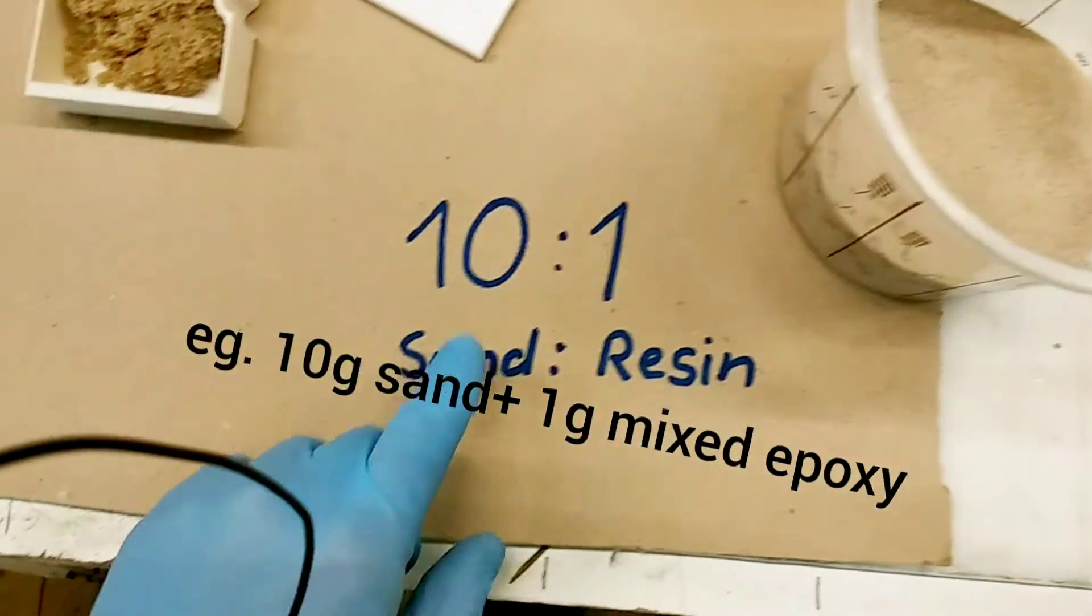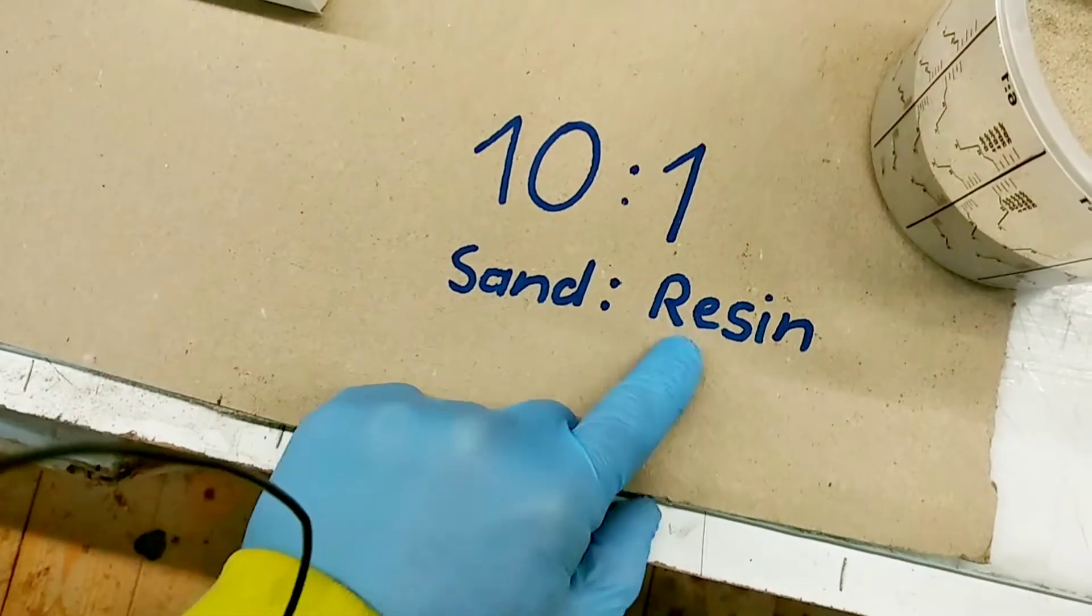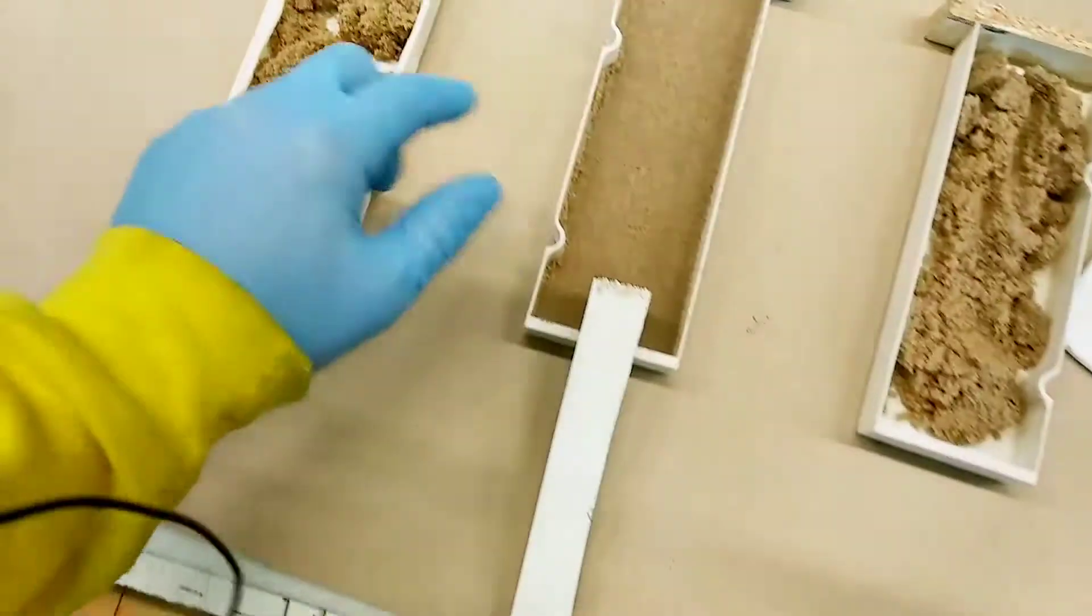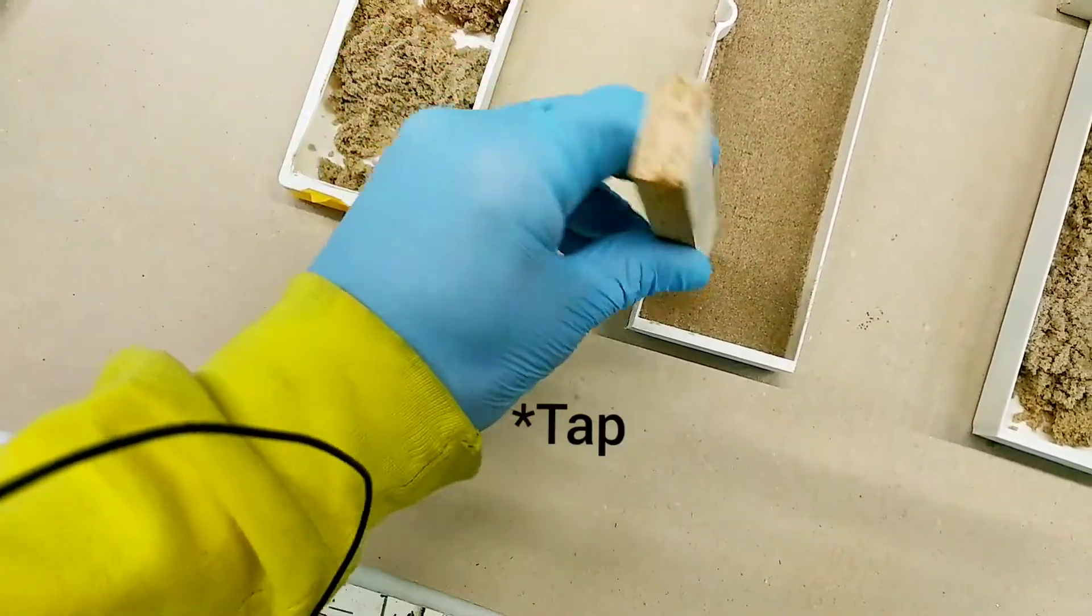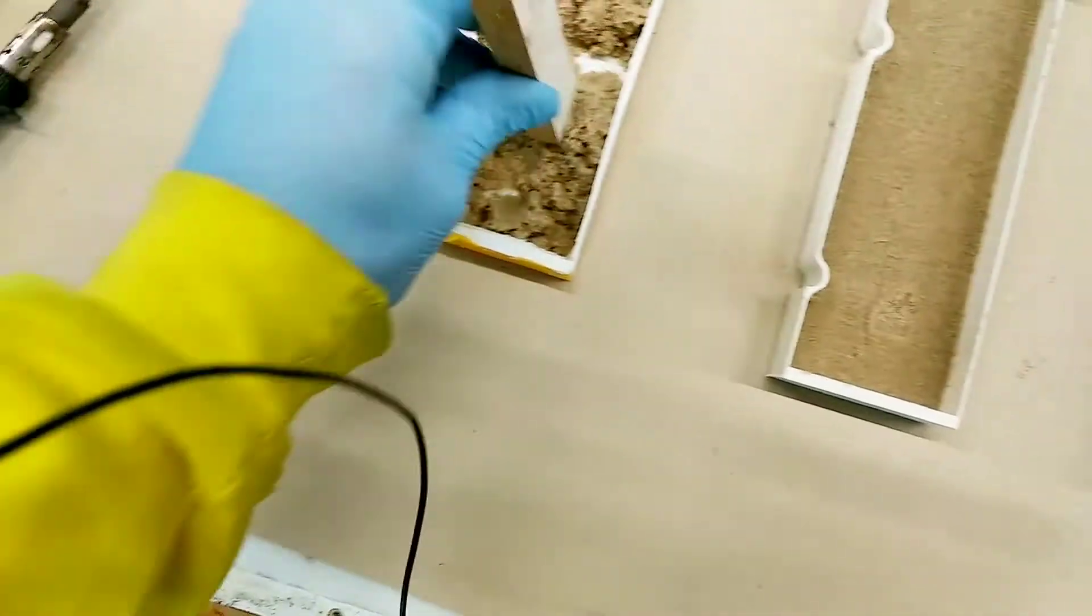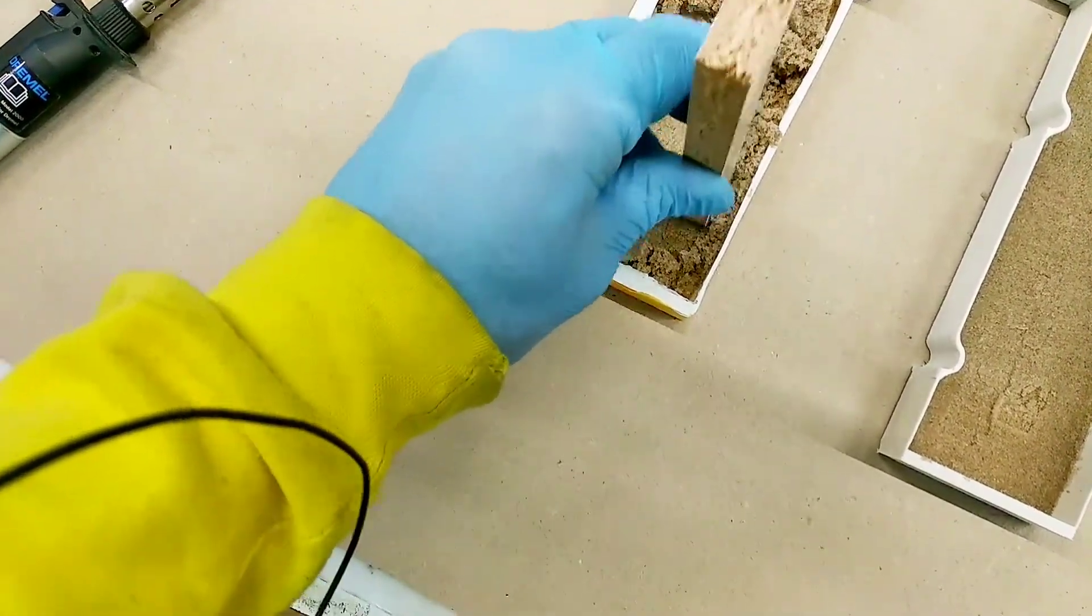The mixing ratio is 10 to 1. So 10 parts of sand and 1 part of resin. After shoving it into the mold you use a simple piece of wood and compress it down. As you can see that will give you a nice finished surface.